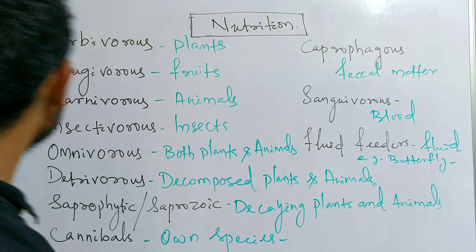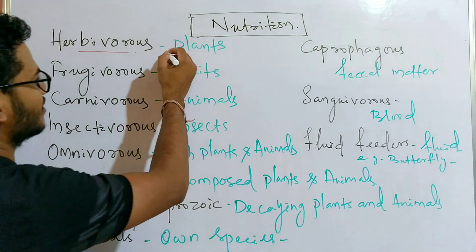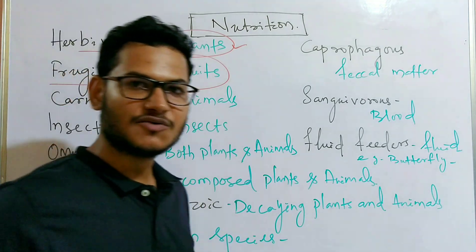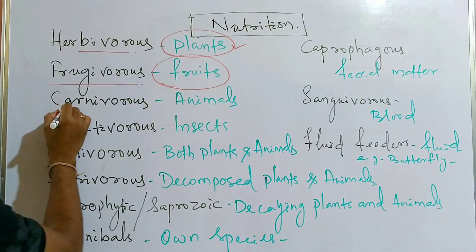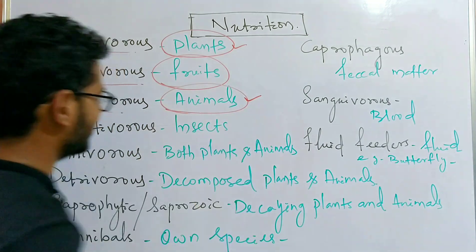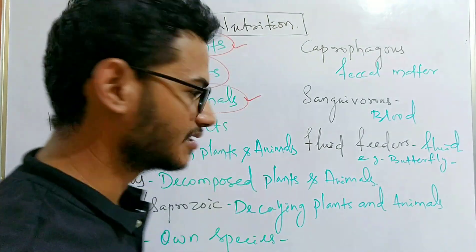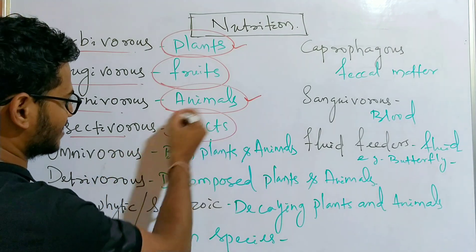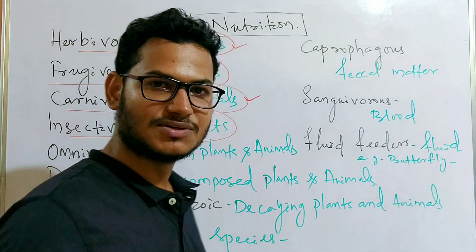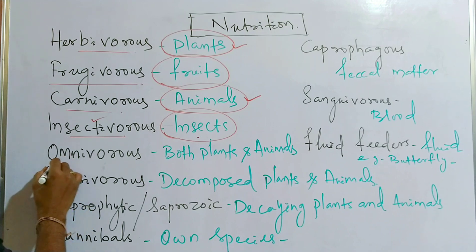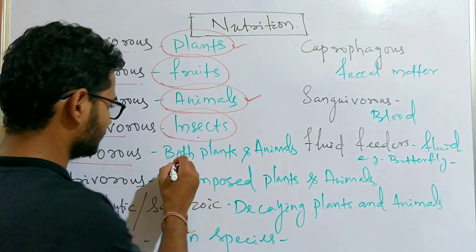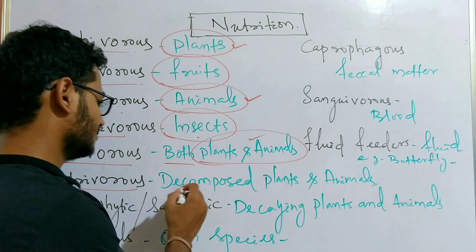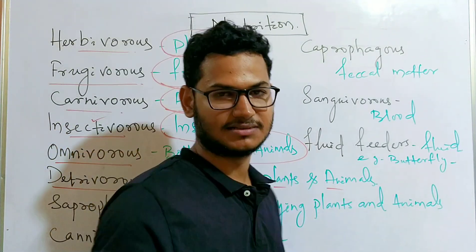Herbivores are organisms that feed on plants. Frugivores are organisms that feed on different types of fruits. Carnivores are animals that feed on other animals. Insectivores are organisms that feed on insects. Omnivores — the best example is human beings — we eat both plants and animals as our food.